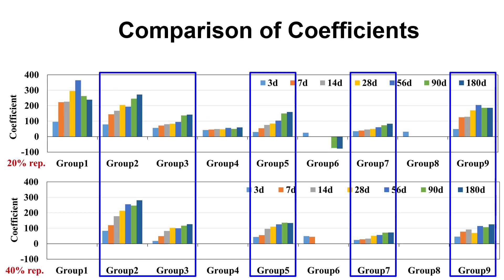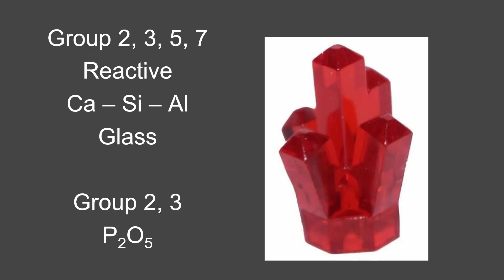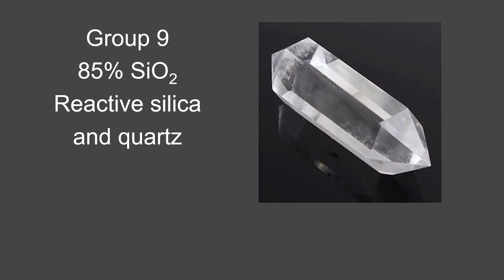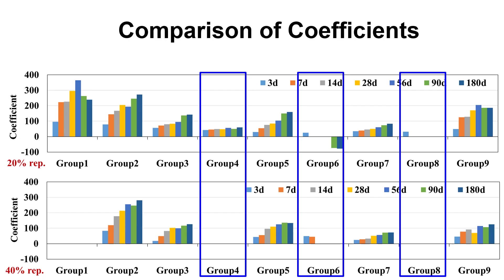Groups two, three, five, seven, and nine seem to contribute — they go up — and there's similar performance between 20% and 40%. These groups seem to be reactive calcium silicate aluminate glasses. Groups two and three are especially interesting because they contain quite a bit of phosphorus, which is not talked about a lot in the fly ash literature, but we find it to be something very important. Group nine seems to be almost 85% SiO2 — reactive silica, or possibly quartz, but quartz is inert and doesn't do much — so it's probably mostly this reactive silica.